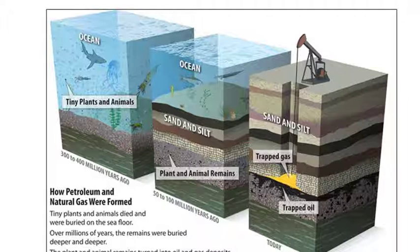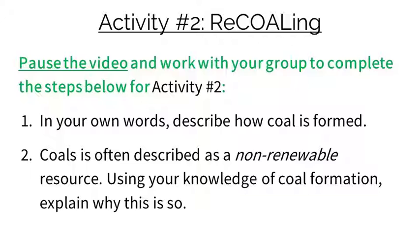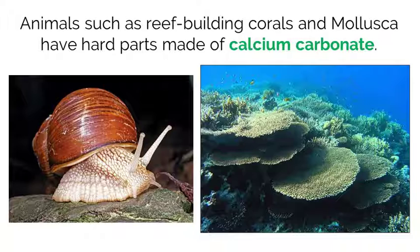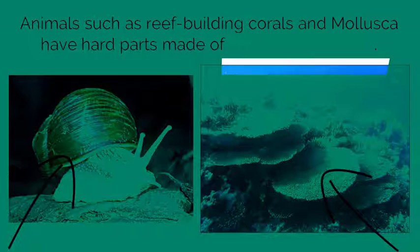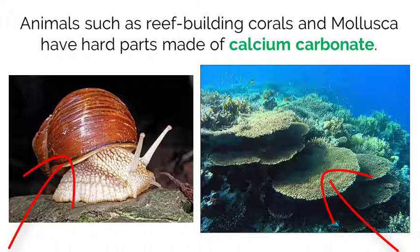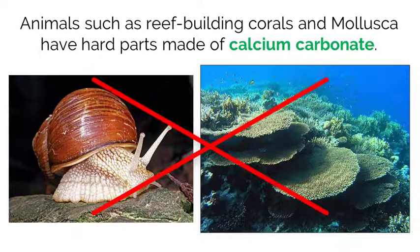Combusting or burning these fossil fuels adds more carbon dioxide into Earth's atmosphere. Carbon also exists in aquatic ecosystems and helps support life. Animals such as reef-building corals and mollusca have hard parts like shells and exoskeletons made of calcium carbonate. Without the dissolved carbon entering from the atmosphere being turned into calcium carbonate, these organisms would not be able to create the structures that they rely on for survival.